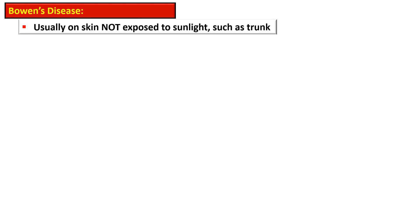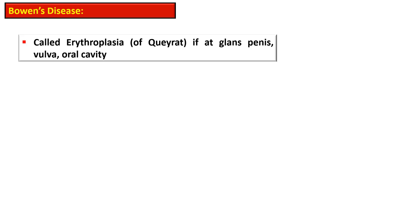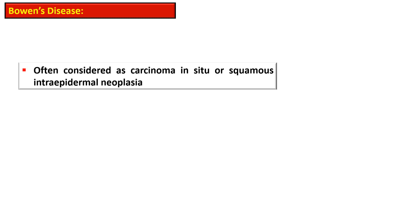The lesions of Bowen's disease usually occur on skin that is not exposed to sunlight, such as the trunk. Lesions occurring on the glans penis, vulva, or oral cavity are termed erythroplasia of Queyrat. They are often considered as carcinoma in situ or squamous intraepidermal neoplasia.